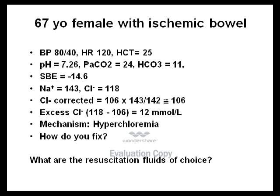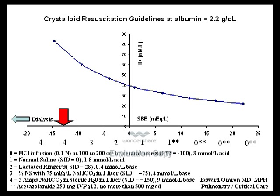Case 2: 67-year-old female with ischemic bowel. BP 80/40, HR 120, hematocrit 25%. pH 7.26, PaCO2 24, bicarbonate 11, base deficit 14.6 mmol/L. Sodium 143, chloride 118; corrected chloride should be 106, revealing 12 mmol excess chloride. This individual has evolving septic shock with possible ongoing bleeding and anemia. Early goal-directed therapy must not be forsaken. Resuscitation fluids should be isotonic and balanced to avoid aggravating the metabolic acidosis; isotonic sodium bicarbonate solution is advocated as both resuscitation and maintenance fluid.